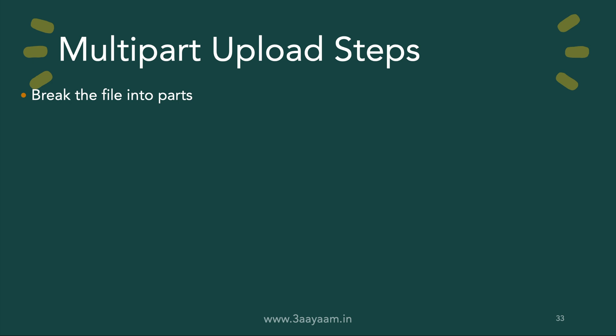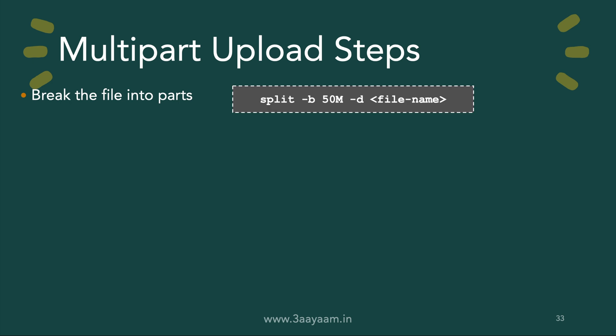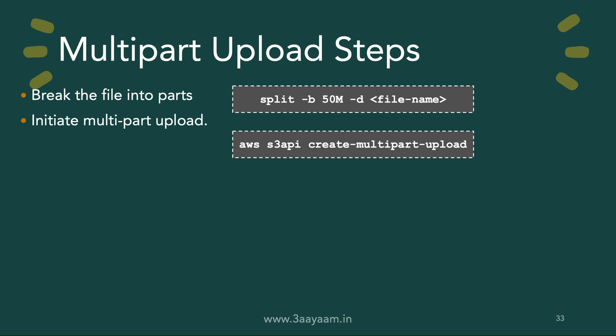The first step is to break the file into parts — that is our responsibility. You can use commands like `split`, which are readily available in Linux distributions. Here I'm splitting a file with each split of size 50 MB. Then we initiate the multi-part upload using the AWS S3 API `create-multipart-upload` command. When we run this command, S3 returns an upload ID, which is a unique identifier for this particular upload.